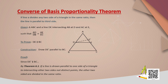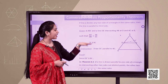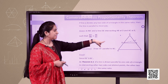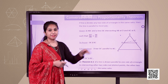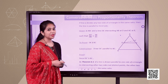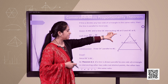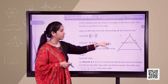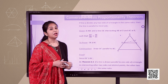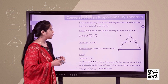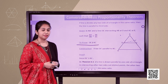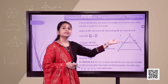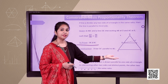The converse states: in triangle ABC, D and E are points on side AB and AC respectively. It is given that AD upon DB equals AE upon EC. What we have to prove is that line DE is parallel to line BC.